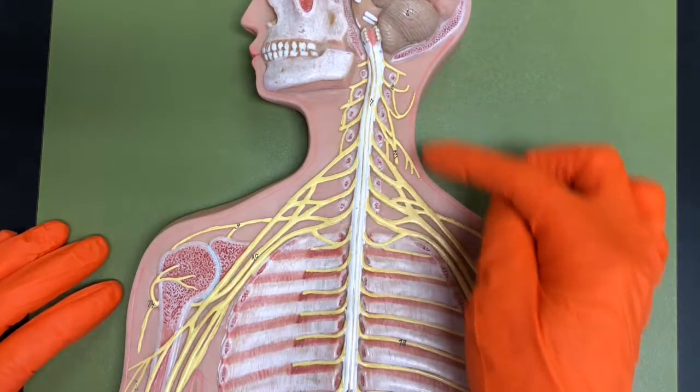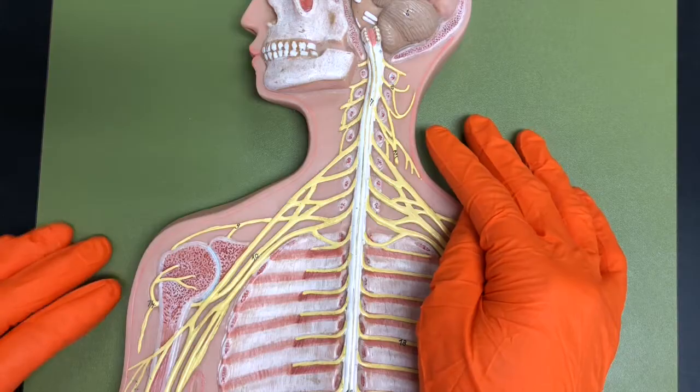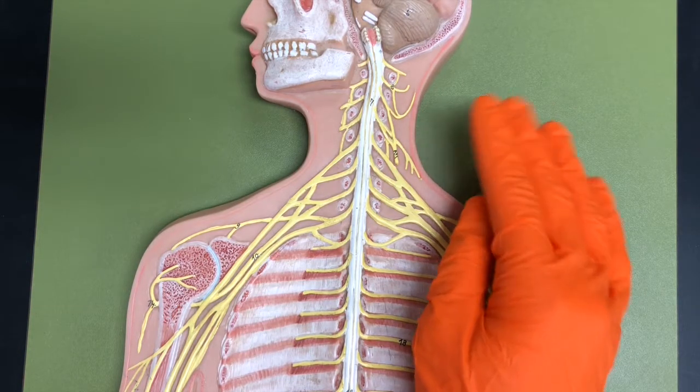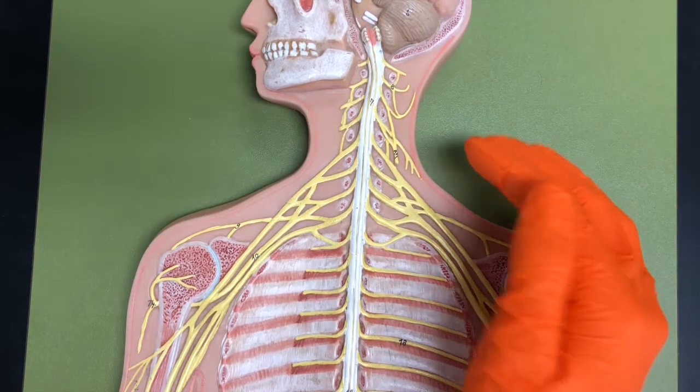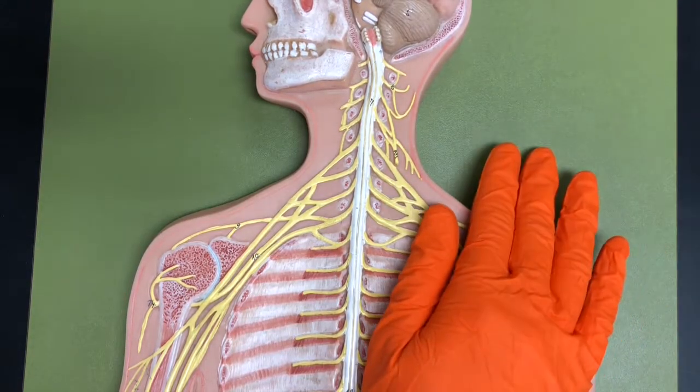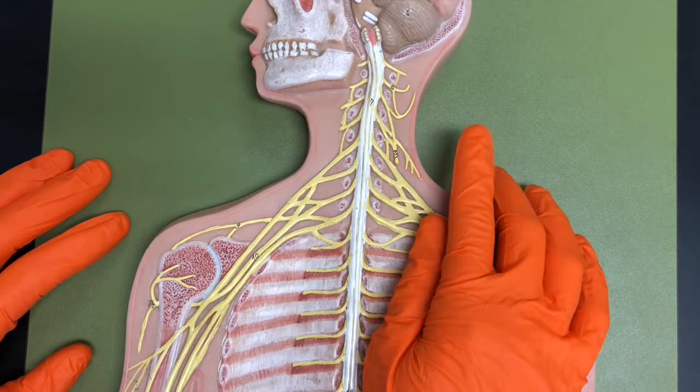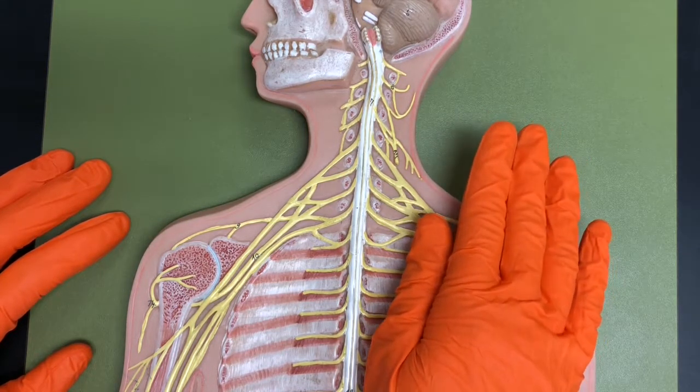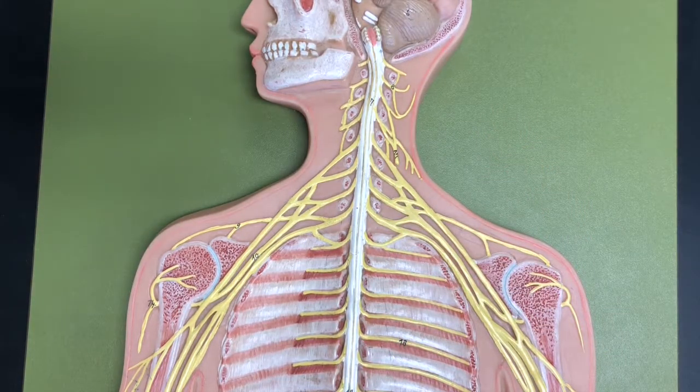Here at the levels of C1 to C4, we have the cervical plexus and the cervical plexus is going to innervate muscles of the head, neck, and upper shoulders. And another really important branch off of the cervical plexus is the phrenic nerve. And the phrenic nerve is what innervates the diaphragm, which is super important for respiration.